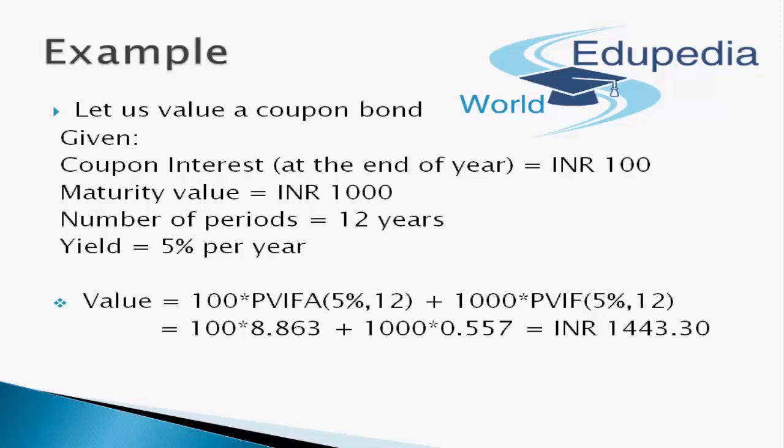So we can say the value of a bond with maturity value of INR 1000 after a period of 12 years has a present value today of INR 1,443.30. The key concept to remember is that coupons received every year are assumed to be reinvested at a rate equal to the expected yield — therefore we are earning interest on interest. This is part of the compounding process inherent in bond calculations, which is why the value rises from 1000 to 1,443.30.